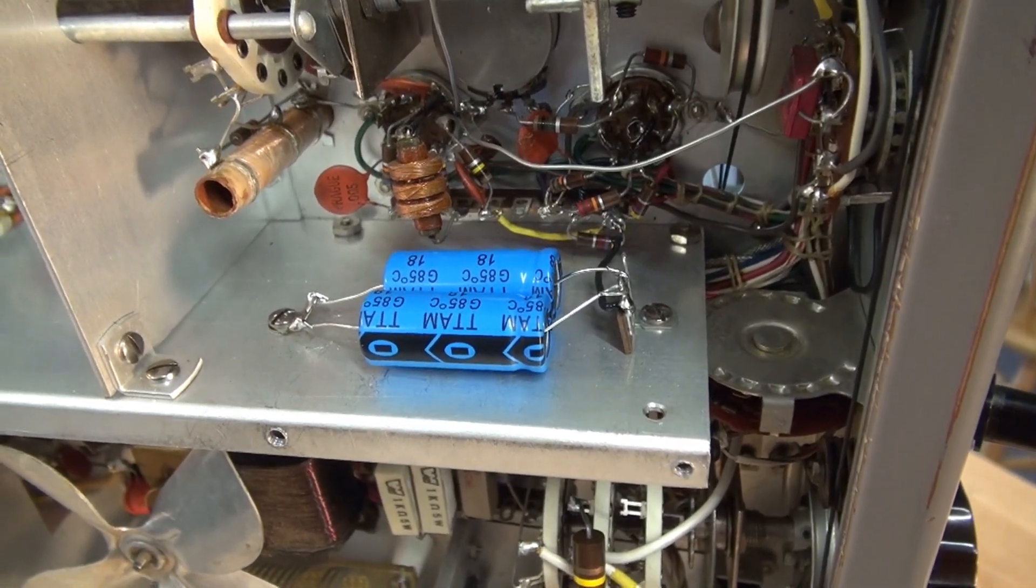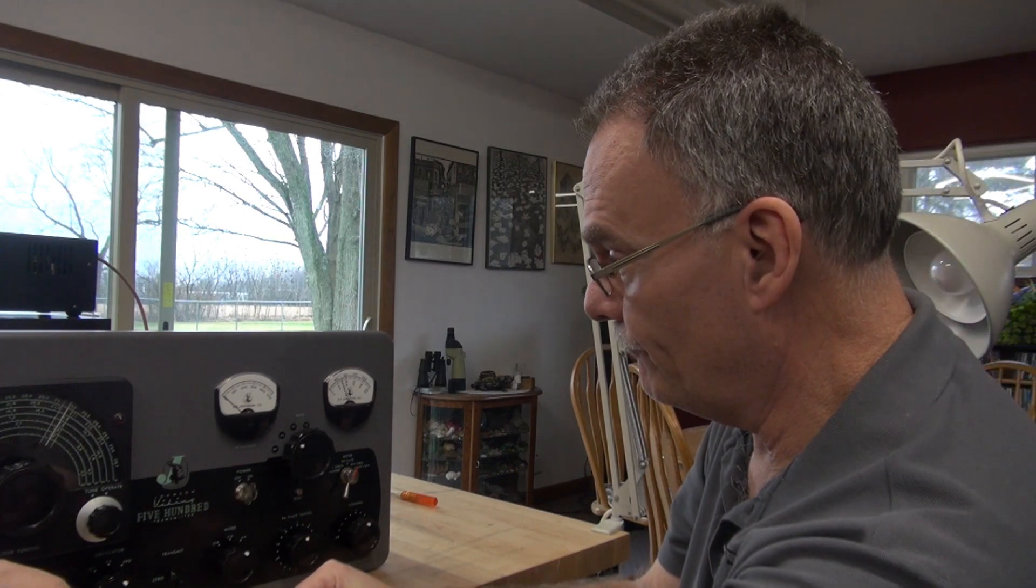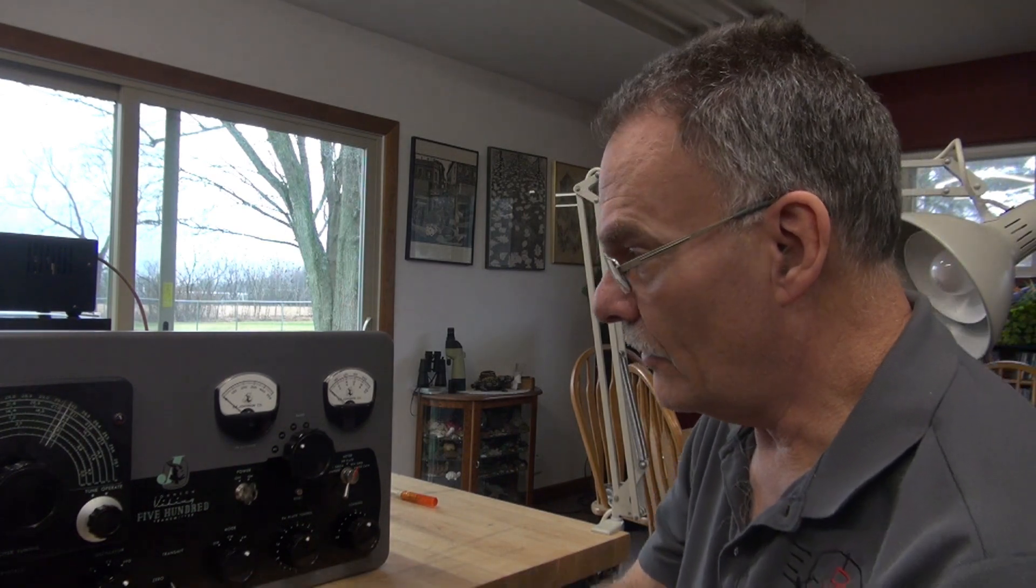Alright, so I restored the values of C131 and C136 back to the specification in the Johnson schematic, and guess what? The grid is normal again. So that overcapacitance was screwing up the keyer circuit. Thank God.